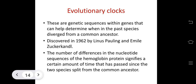Evolutionary clocks: there are genetic sequences within genes that help determine when species diverged from a common ancestor. The number of differences in nucleotide sequences of hemoglobin proteins specifies a certain amount of time that has passed since two species split from their common ancestor.